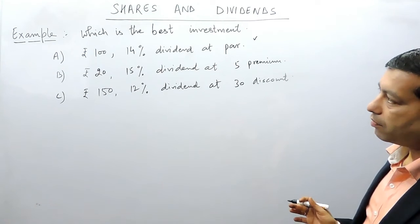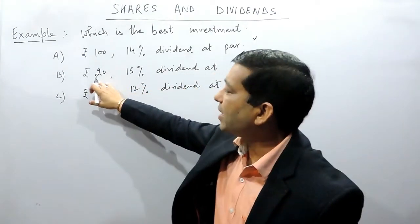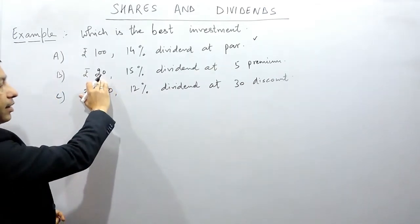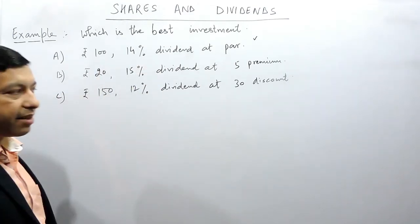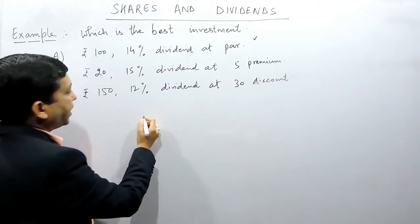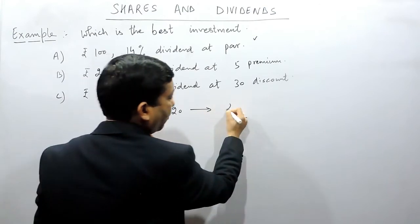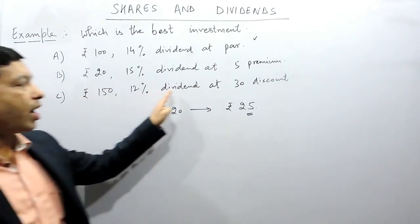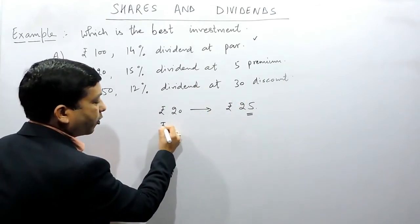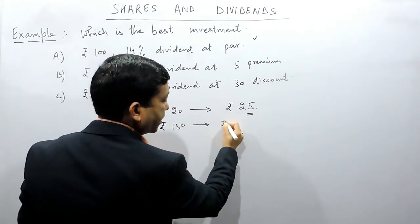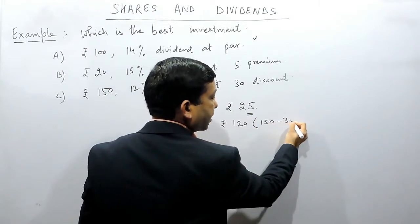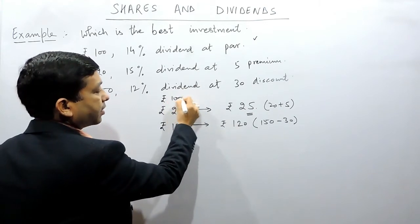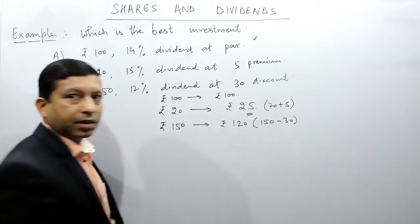At par means a rupees 100 share can be purchased for rupees 100. In case of B, the rupees 100 share is at 5 premium — the company pays dividend on rupees 100 but sells the share for rupees 25, charging 5 rupees premium for their goodwill. So the rupees 20 share is purchased at rupees 25. In the third case, rupees 150 at 30 discount means the share is purchased for rupees 120, that is 150 minus 30.